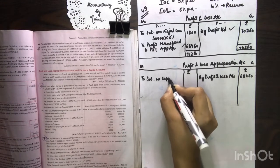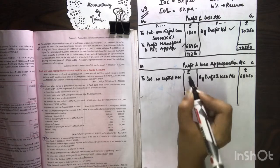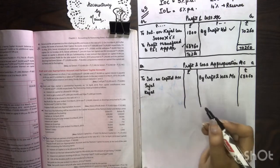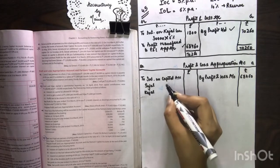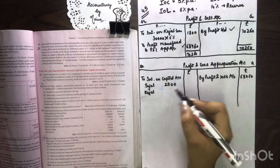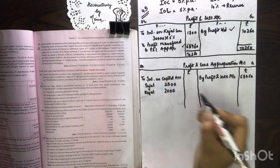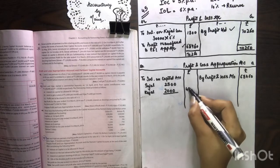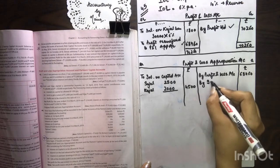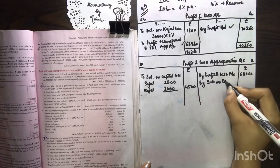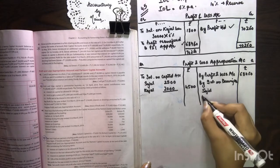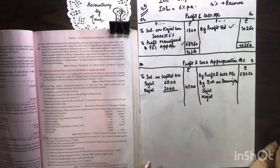We have two partners — one is Sajal and another one is Kajal. Sajal's interest on capital: 50,000 at 5% is 2,500. Kajal's 40,000 at 5% is 2,000. So the total of both comes to 4,500.